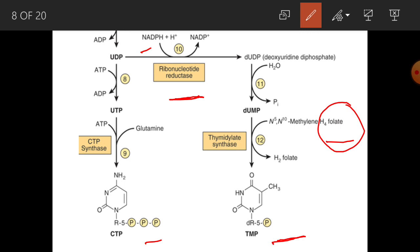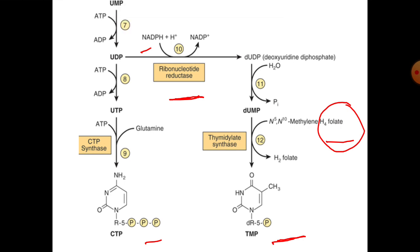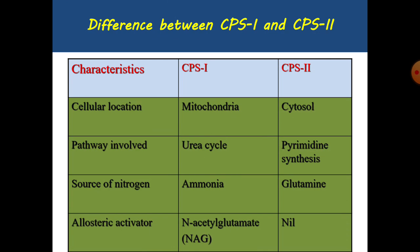Now you can understand why folate is important for DNA and RNA synthesis — folate contributes to both purine and pyrimidine synthesis. If folate is lacking, there is poor synthesis of DNA and RNA, which leads to megaloblastic anemia.